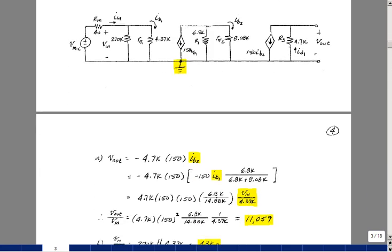So let's analyze the circuit if we can. We'll start at the output side and work our way back to the input side. So the output voltage is just this current flowing into the 4.7 K resistor. So that's going to be a minus 150 IB2 times 4.7 K. And this is the expression here.